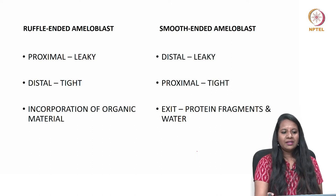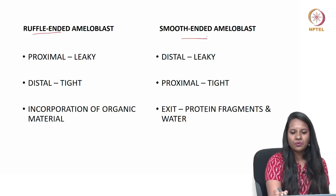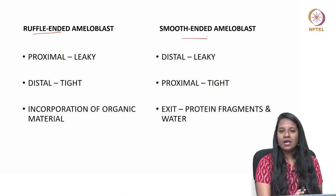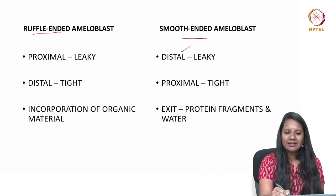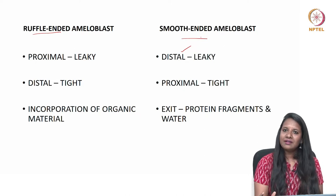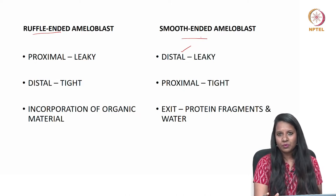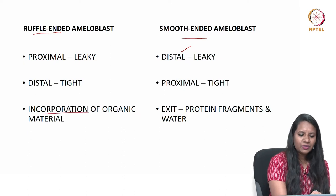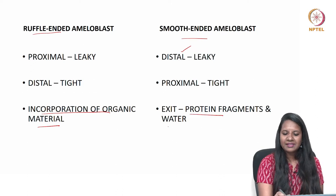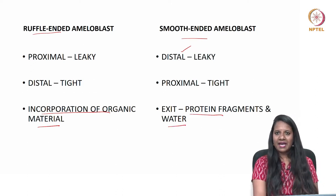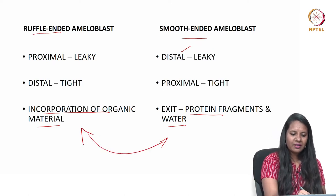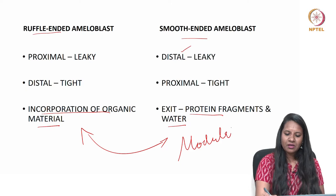Moving to the differences between ruffle-ended and smooth-ended: in the ruffle-ended ameloblast, the leaky region is the proximal surface and the tight region is distal; in the smooth-ended, the leaky region is distal and the tight is proximal. Ruffle-ended leads to incorporation of organic material, while smooth-ended helps in the exit of protein fragments and water. The change between ruffle-ended and smooth-ended is known as modulation.